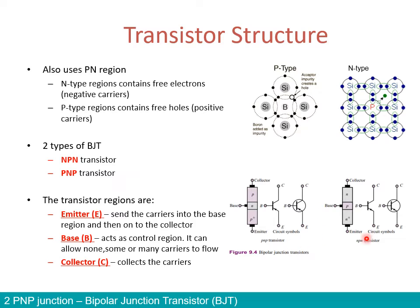If we look at an NPN transistor, as it is the opposite of PNP, in the middle we have the base which is a P region, and around it we have the collector and emitter made of N regions. What is the emitter? Starting with base, since it is the one in the middle: the base acts as a control region. It is the region that allows carriers to flow across the transistor.